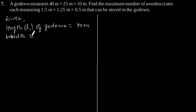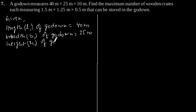Breadth B1 of godown is equal to 25m. And height H1 of godown is equal to 10m.